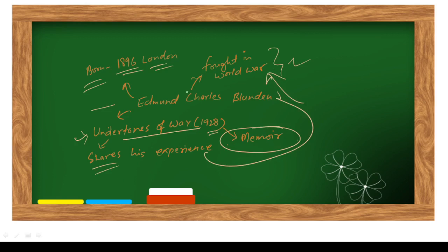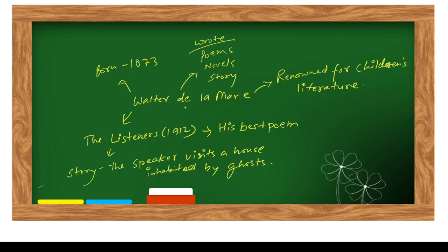Walter de la Mare, born in 1873, wrote poems. He was a prolific writer and he wrote poems, novels, and stories as well. He was renowned for children's literature. He wrote many books for children. The Listener, this was his first poem and this was his best poem, got published in 1912. Here is the story of a speaker visiting a house inhabited by ghosts. This was the subject matter.